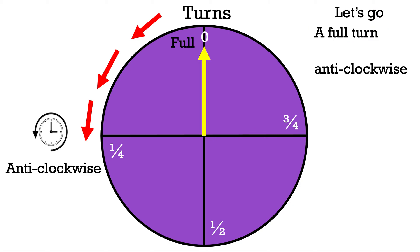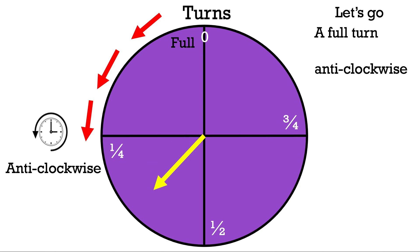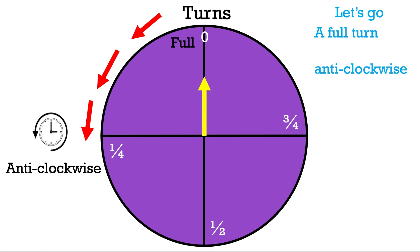Let's move the spinner back to the top. The question says: a full turn anticlockwise. We go to the left, passing a quarter turn, passing a half turn, passing a three-quarters turn, and finally reaching a full turn. That covers anticlockwise and clockwise using a quarter turn, half turn, three-quarters turn, and a full turn. Thank you for listening and have a good day.